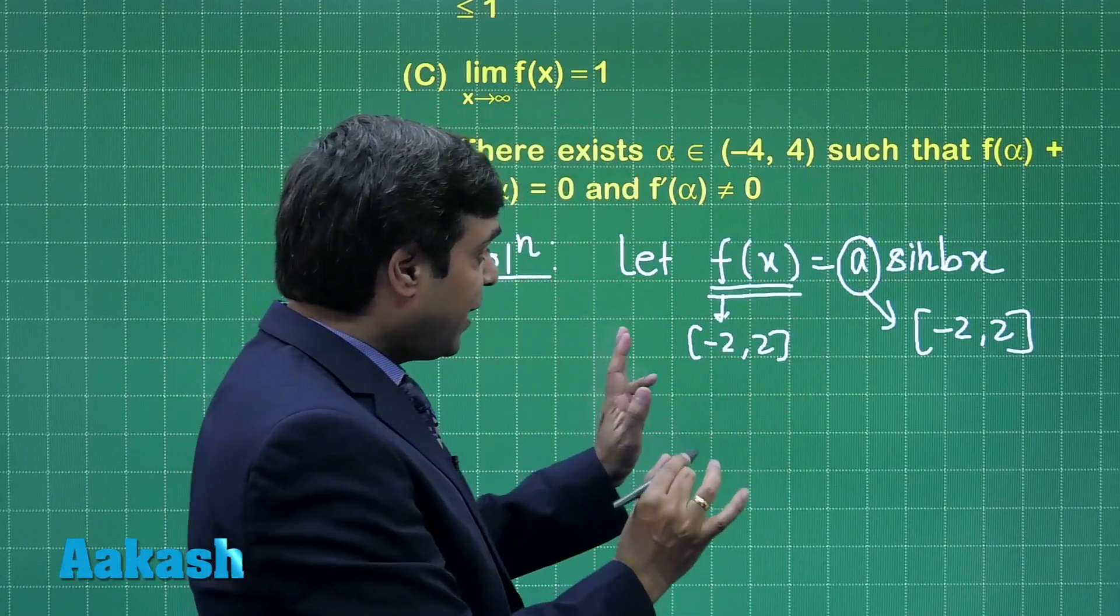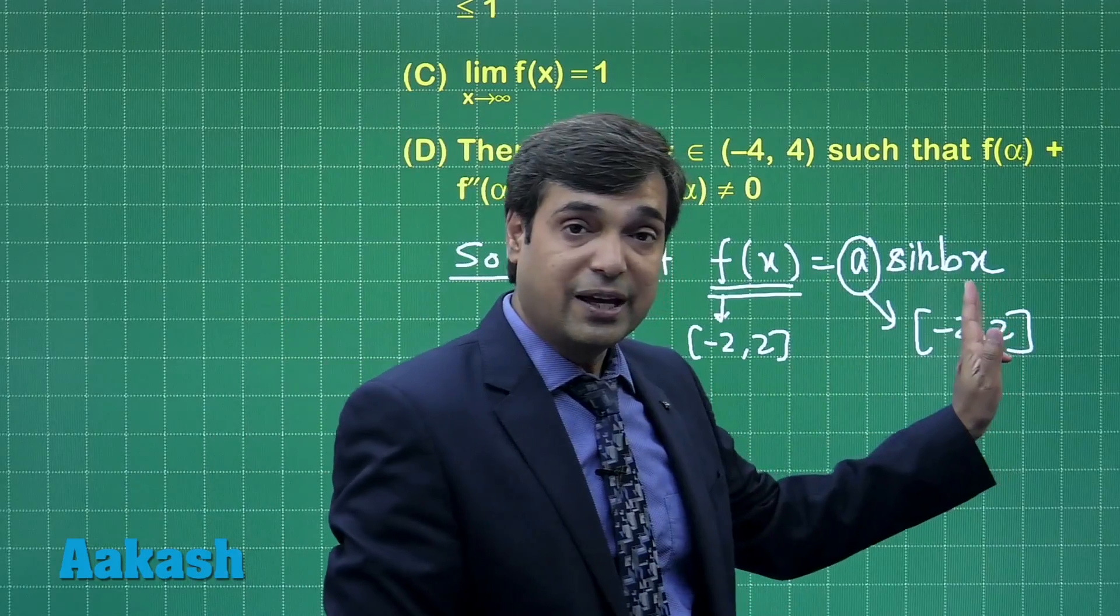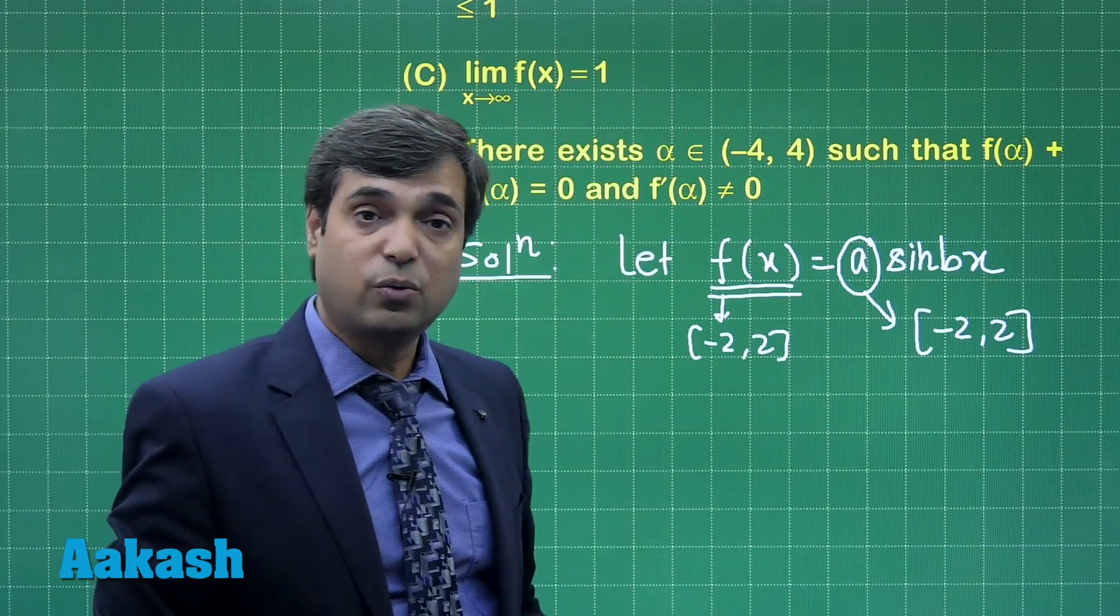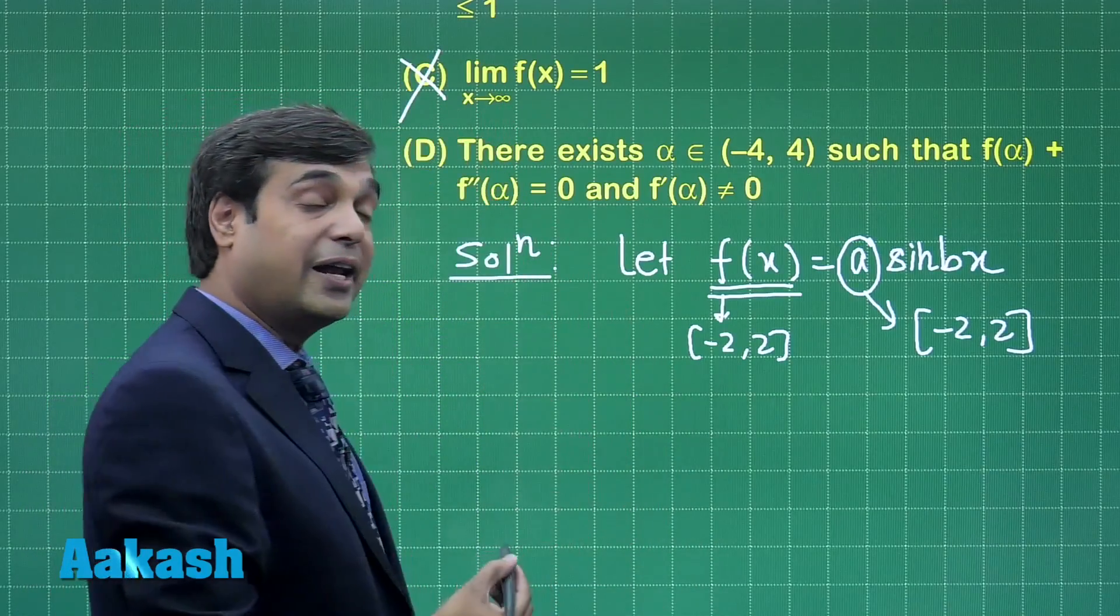We can see here for the function f(x) equals a sin(bx), clearly limit x approaching to infinity f(x) is not equal to 1, means option C is not correct.